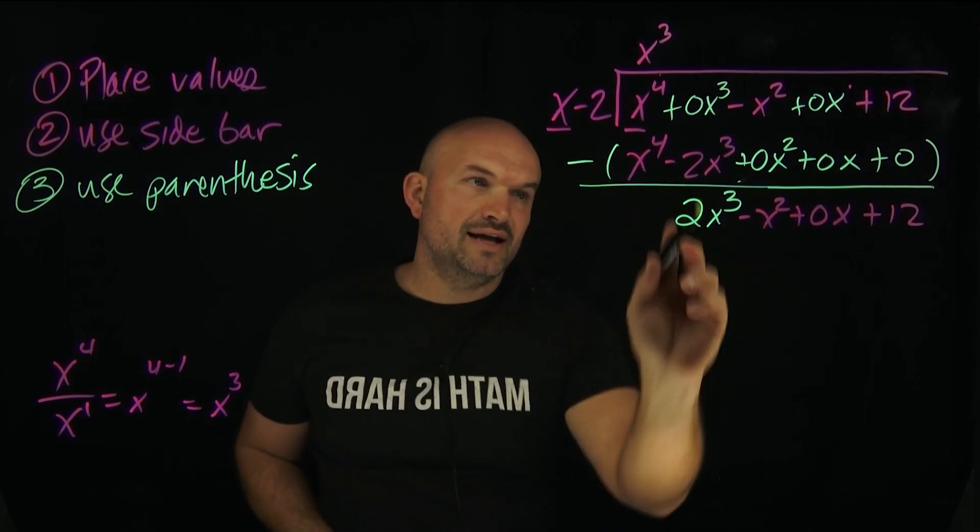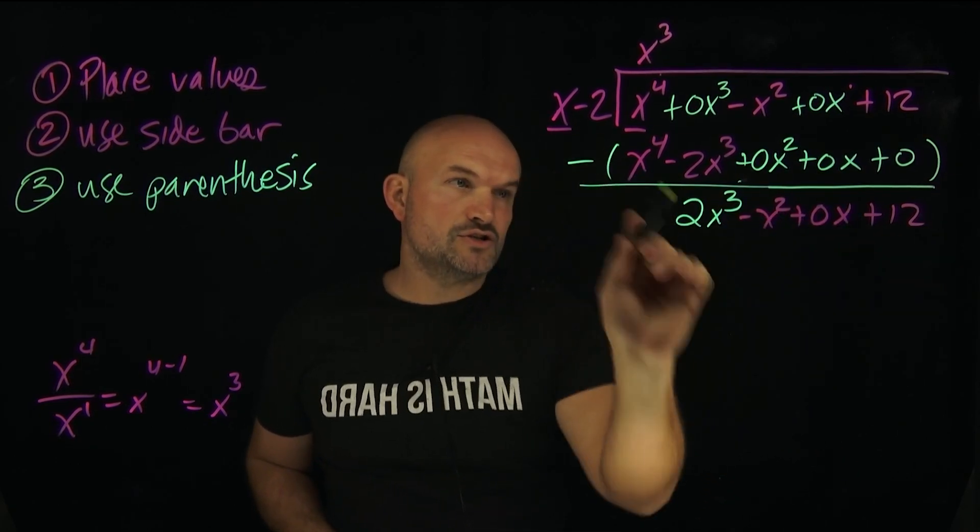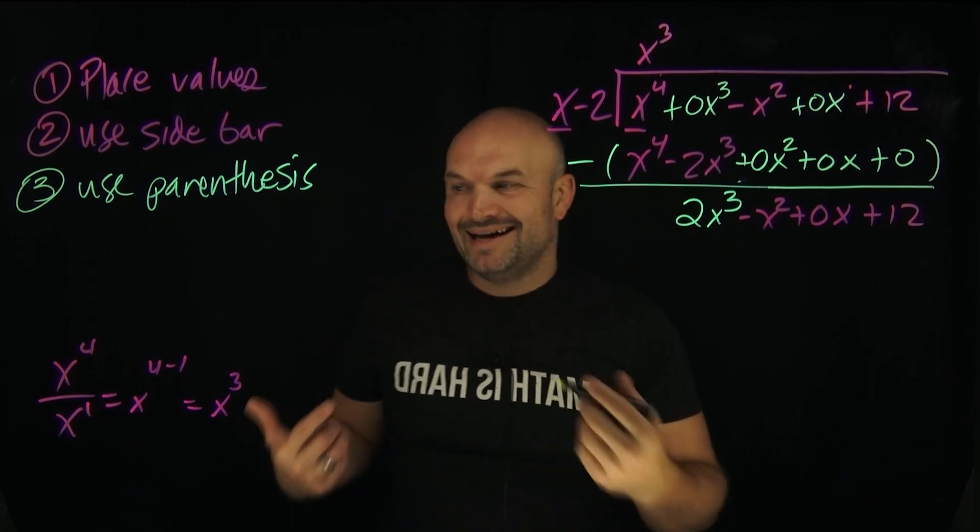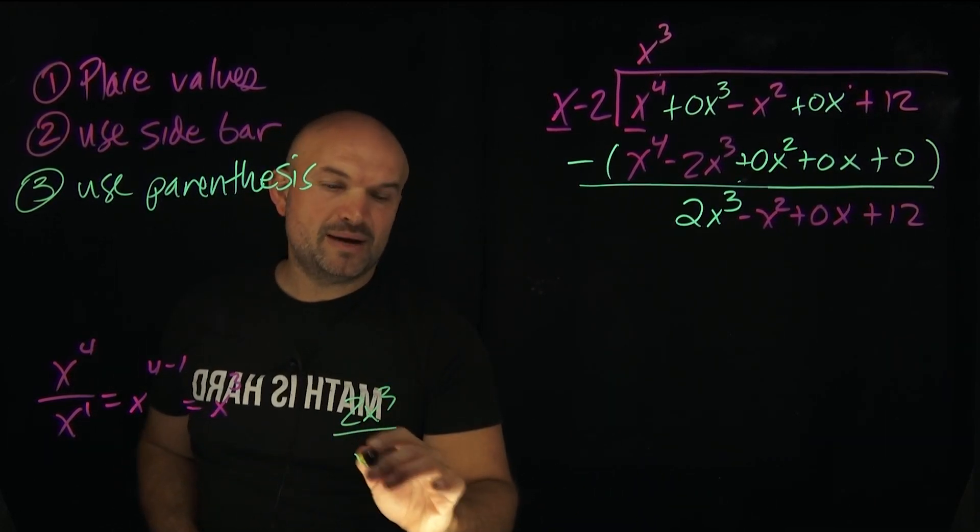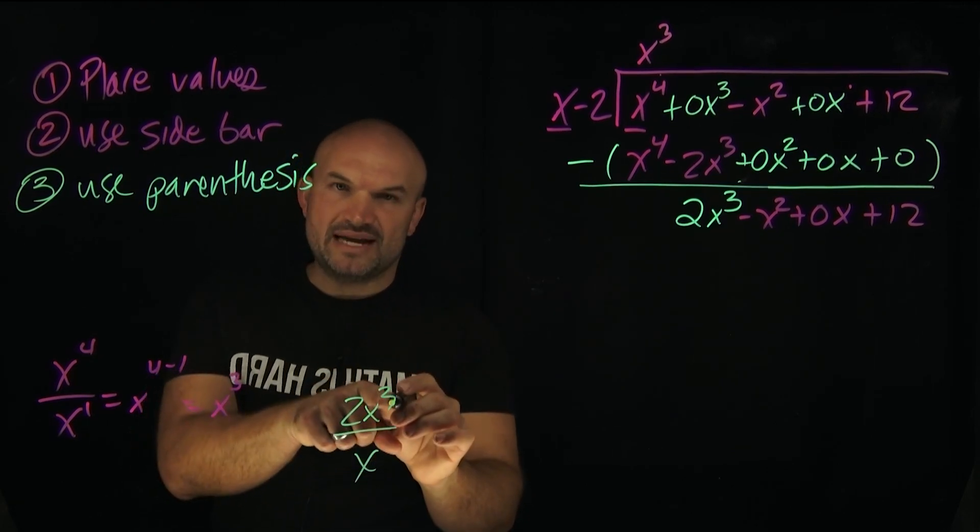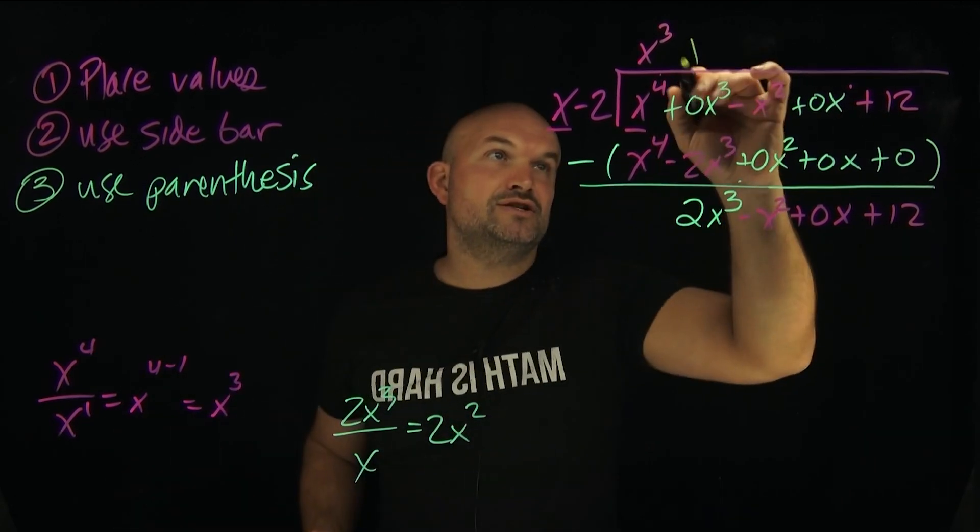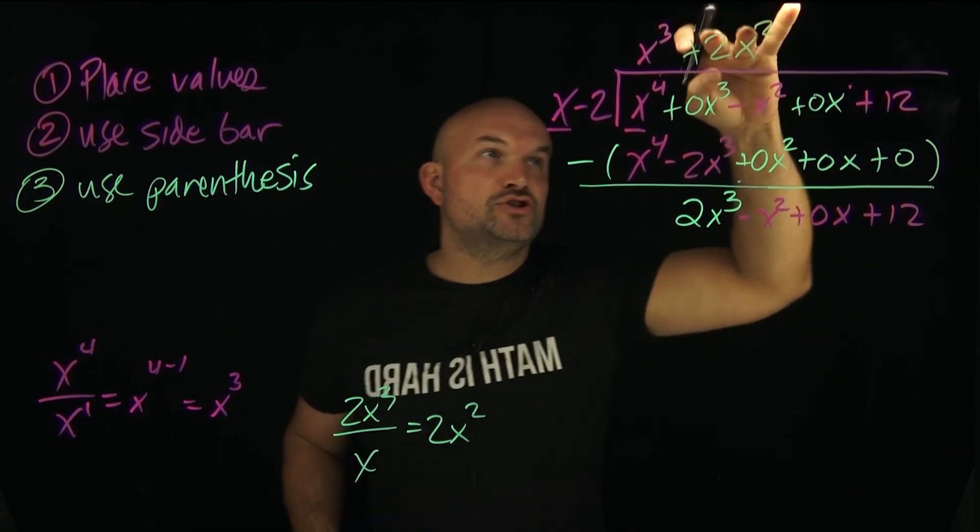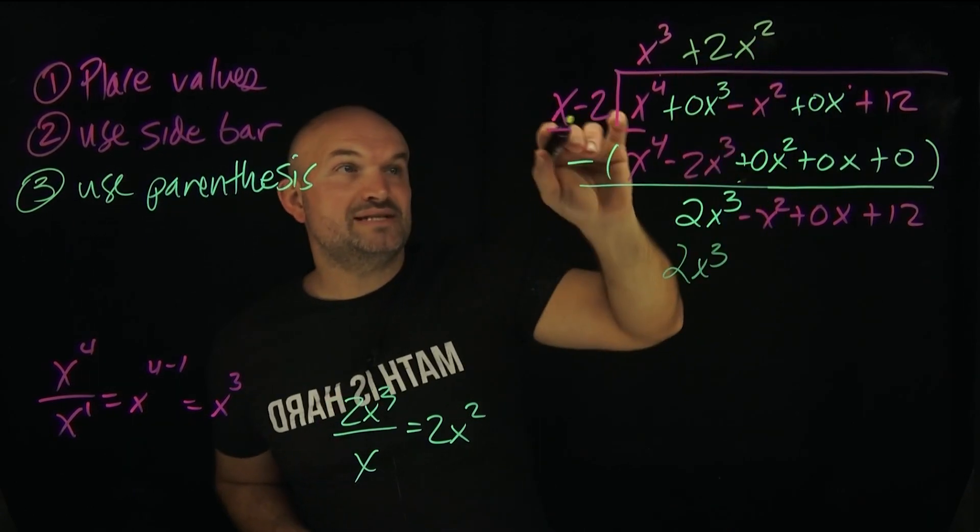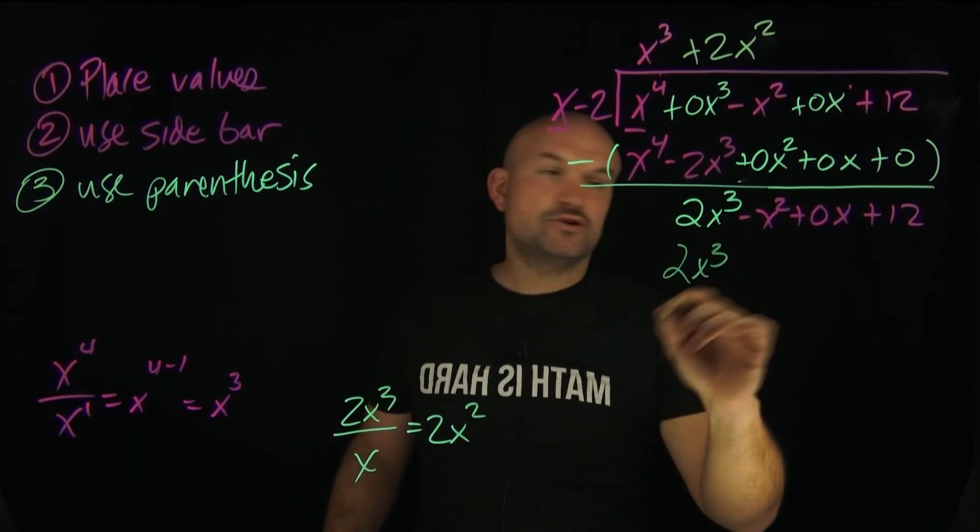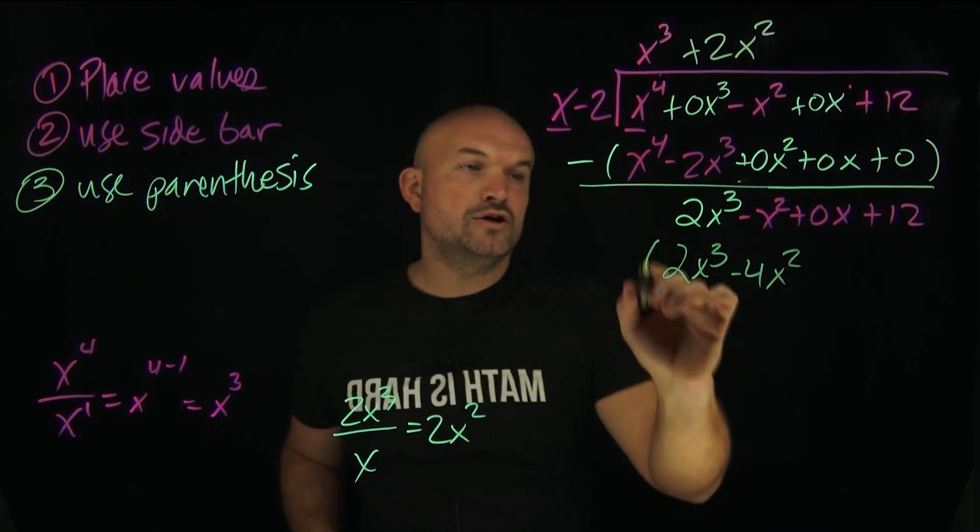So now we have the long division algorithm to repeat. We're going to take our first term on our divisor and divide it into our next expression that we have here. So x divides into 2x³. Again, just do the work over here. 2x³ divided by x—well, x divides into x³ x² times, and we have the 2, so that's going to be 2x² times. Now, 2x² times x is 2x³. 2x² times -2 is going to be -4x².